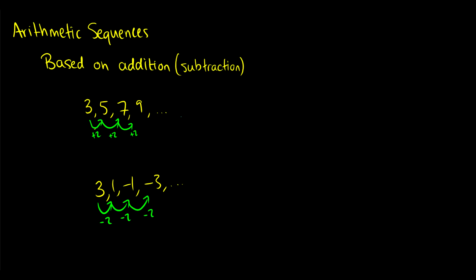We can also do this with decimal points. So we can have 2, 1.3, 0.6, negative 0.1, where each time we're subtracting 0.7. Some of these can look challenging, but to determine if a series is an arithmetic series, you just take the difference between two numbers, then pick two other numbers in the sequence and find the difference. If they're the same, then it's probably an arithmetic sequence.